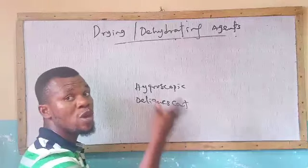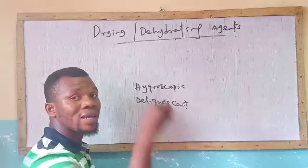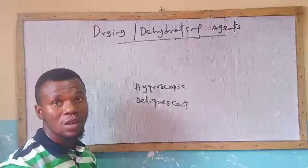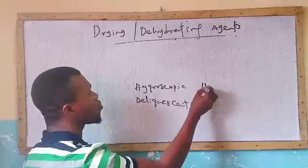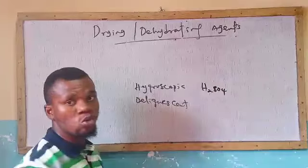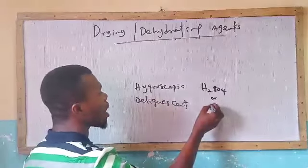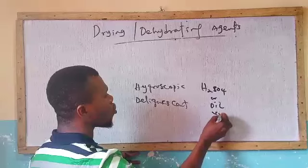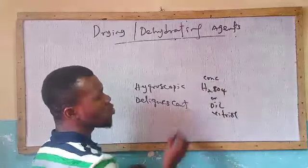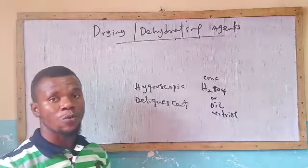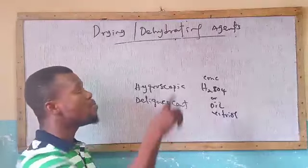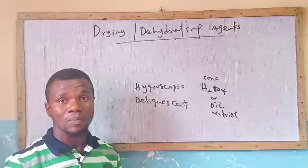But when any of them is being used and it affects physical properties, it is said to be a dehydrating agent. A common example is H₂SO₄ — concentrated H₂SO₄, otherwise known as oil of vitriol. Concentrated H₂SO₄ behaves as a drying agent and at the same time behaves as a dehydrating agent.